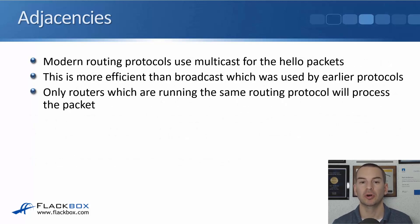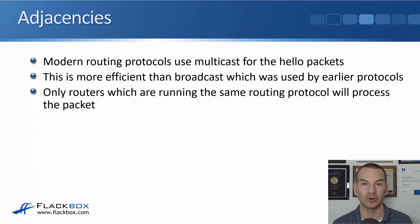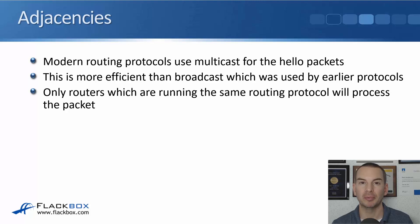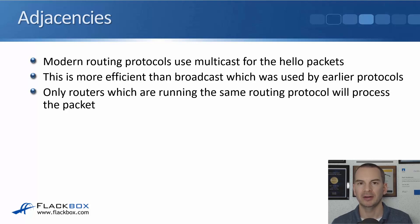Modern routing protocols use multicast for hello packets, which is more efficient than the broadcast used by earlier protocols like RIP version 1. With multicast it's specific to the particular routing protocol, so a device only processes that packet if it's interested in forming an adjacency — unlike broadcast traffic that has to be processed by all hosts.